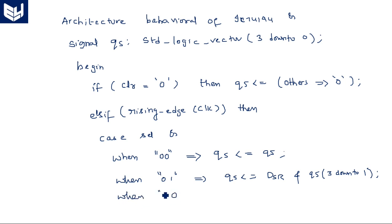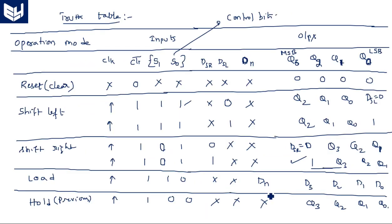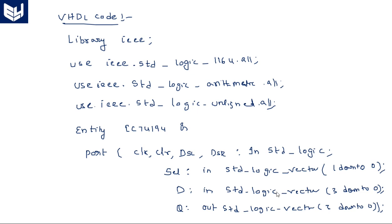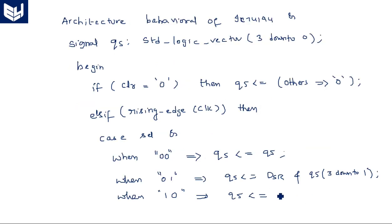When selection is 1,0 — that is loading operation — QS is assigned D, the parallel data input. Loading means QS is simply equal to D.